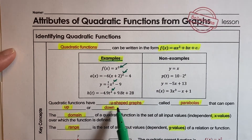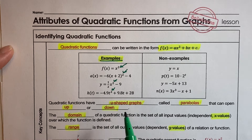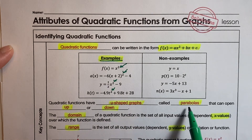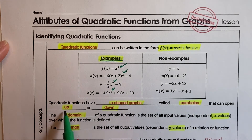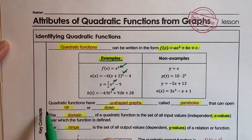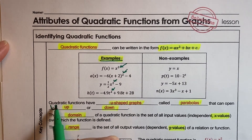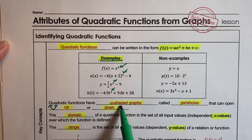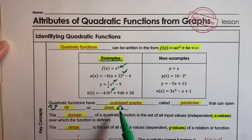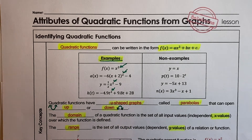Quadratic functions have u-shaped graphs, which are the same as parabolas. Your parabola can open up or it can open down. You will never see it sideways because if it's sideways, it's not a function.